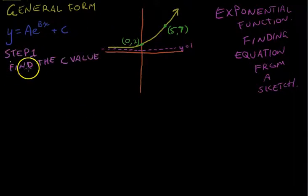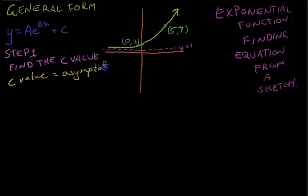Our first step is to find the C value. The C value is very simple to find. The C value equals whatever the asymptote is. You can see on our graph here that there's a dotted line at y equals 1. That means our asymptote is 1.